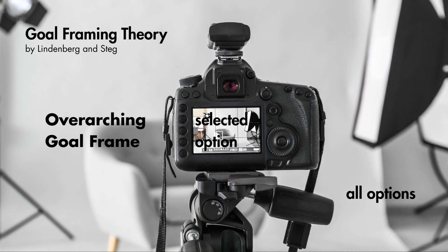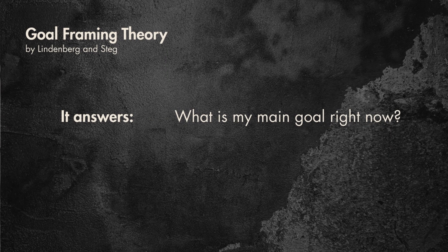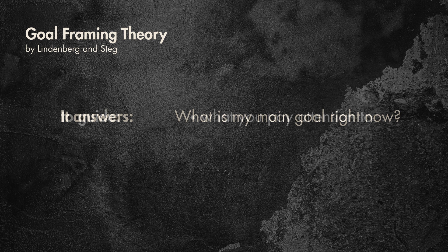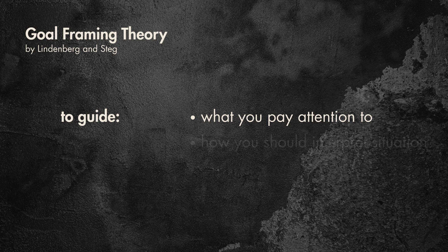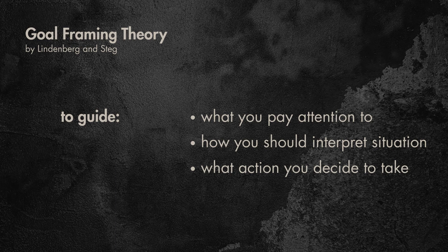So what is an overarching goal frame? It is like the main lens your brain is using at a given moment to decide what matters most. Among all the options, you frame one option and take the shot. It answers the question: what is my main goal right now? And depending on your answer, it guides you to what you pay attention to, how you interpret a situation, and what action you decide to take.